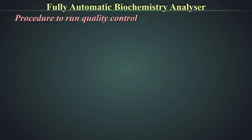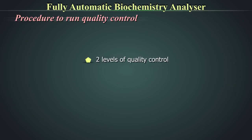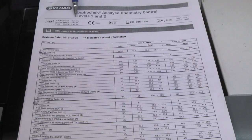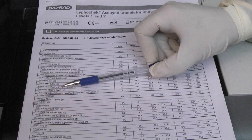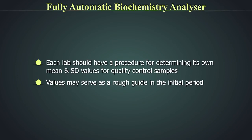Quality control should be run daily as routine for all analytes being tested, also after an analyte is calibrated, after reagent lot change, and after major maintenance activity. At least two levels of quality control should be run — a normal level and an abnormal level. The quality control kit insert contains the lot number, expiry date, mean values, and standard deviation limits for all analytes. Define the quality control in the machine and run it. Each lab should have a procedure for determining its own mean and standard deviation values for quality control samples; manufacturer values may serve as a rough guide initially.